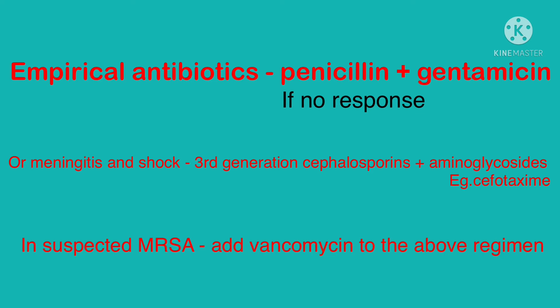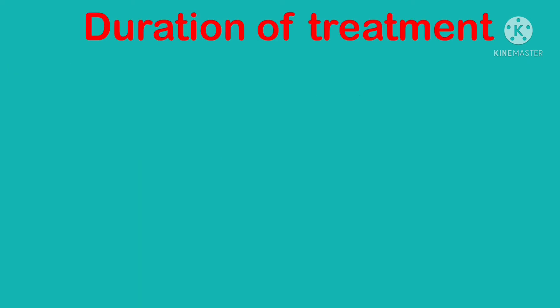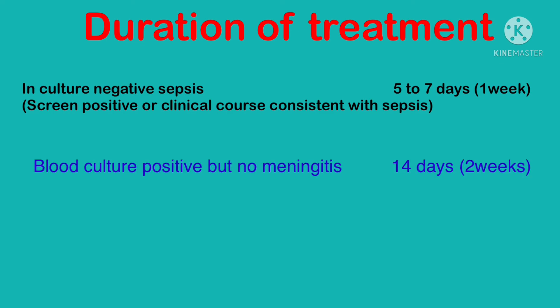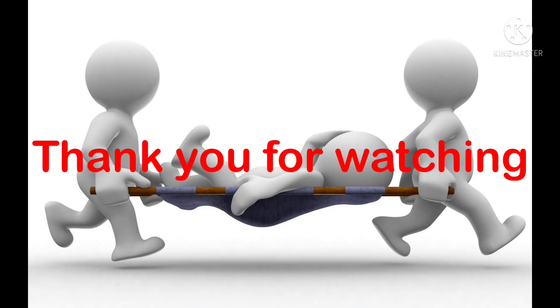If there is no response, or if meningitis or shock is suspected, give third-generation cephalosporins with aminoglycosides like cefotaxime. In suspected MRSA, add vancomycin. Regarding duration of treatment: culture-negative sepsis with screen-positive or clinical course consistent with sepsis is treated for five to seven days; blood culture-positive without meningitis is two weeks; and meningitis requires 21 days (three weeks).